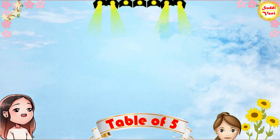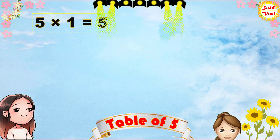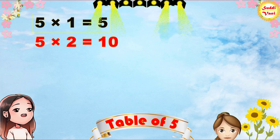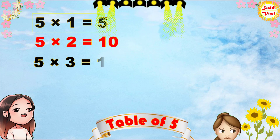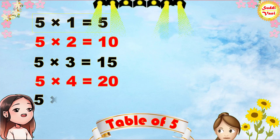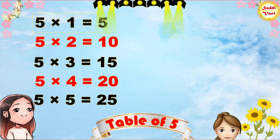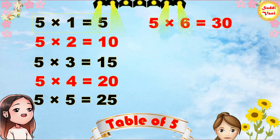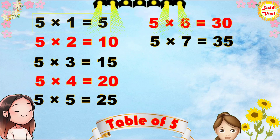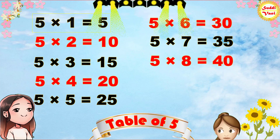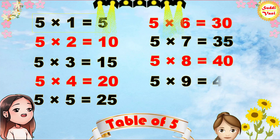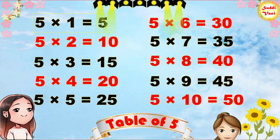Once again: 5 1s are 5, 5 2s are 10, 5 3s are 15, 5 4s are 20, 5 5s are 25, 5 6s are 30, 5 7s are 35, 5 8s are 40, 5 9s are 45, 5 10s are 50.